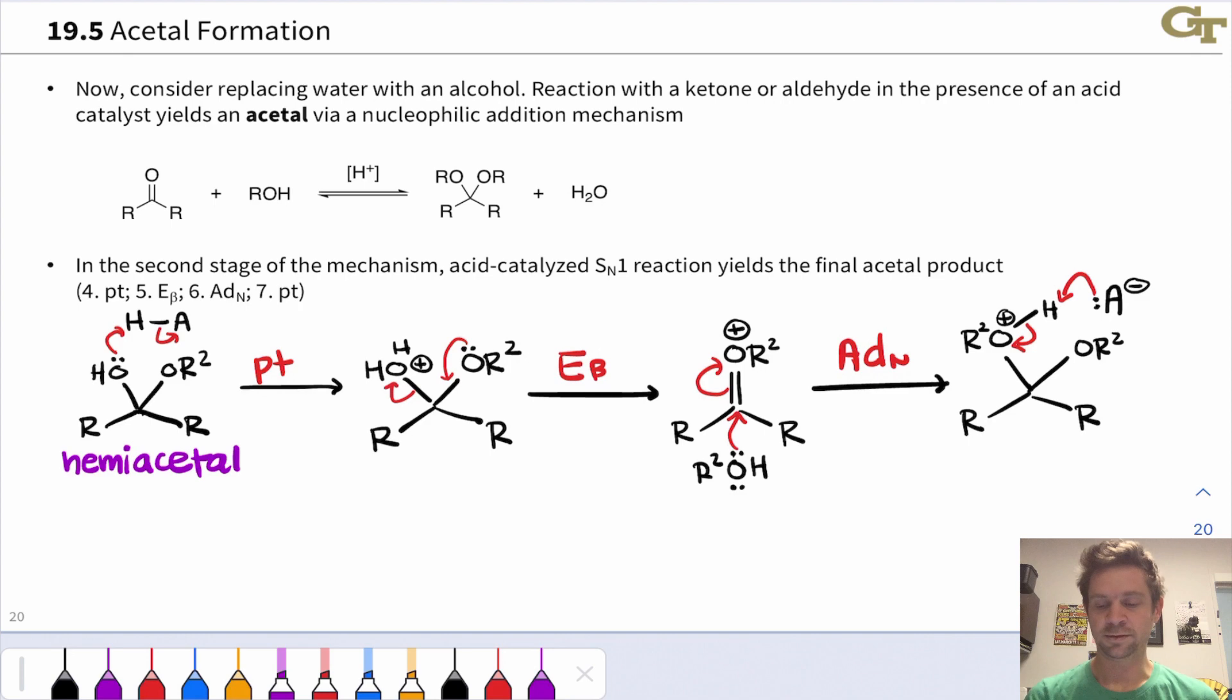And finally to close the catalytic cycle, the conjugate base of the acid can come in and deprotonate. Again, this could be any old reasonable conjugate base under the reaction conditions, H2O, something along those lines. And the result is a neutral product in which the OH group in the original hemiacetal has been replaced with another OR2 group to give the acetal.